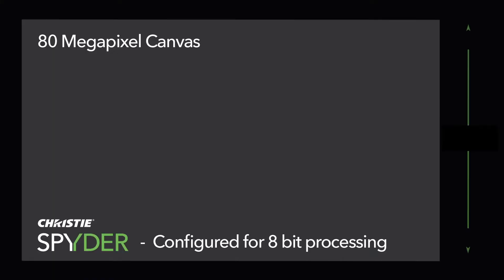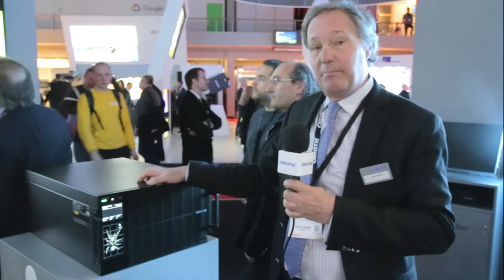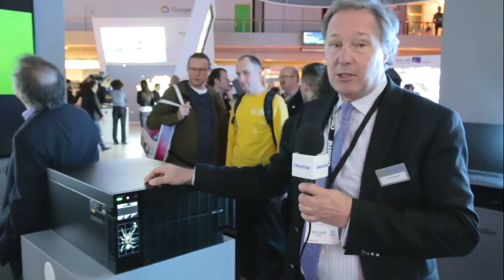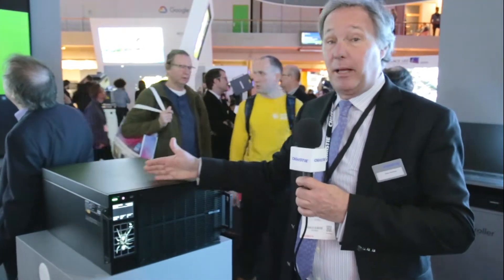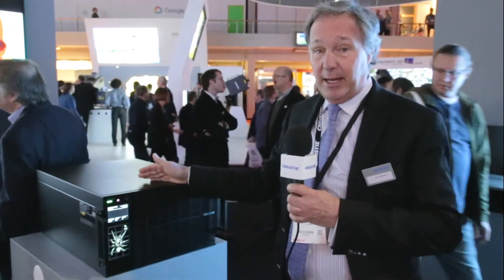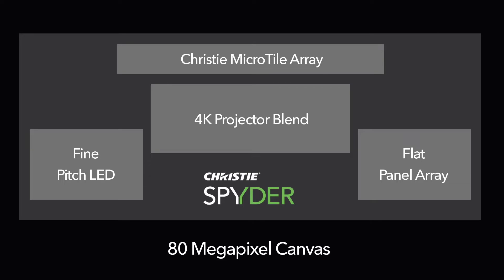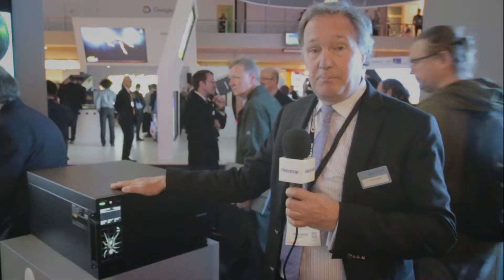The X80 is 80 megapixels. This is a processor that allows you to create a single canvas of 80 million pixels, and from there you can create pixel spaces — and those pixel spaces are what your displays are. A pixel space can be a blended projector array, a monitor array, or a large LED wall, and you can fit multiple pixel spaces within your 80 million pixel canvas.